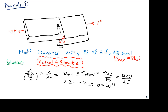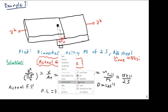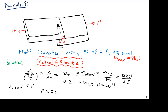We designed for a factor of safety of 2.5, but since we rounded up the diameter to 1.25 inches, the actual factor of safety works out to 3.16 — higher than originally estimated, simply because we're limited to discrete bolt diameter choices. Not bad — we end up with a larger safety margin than designed.